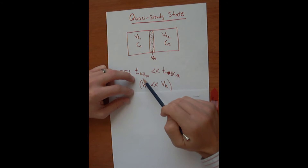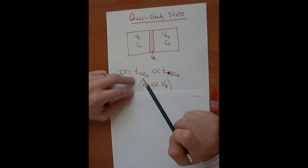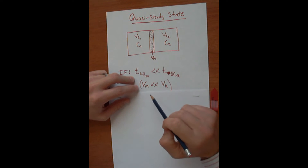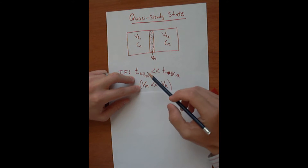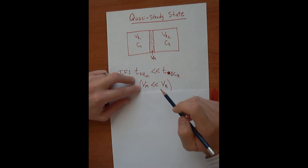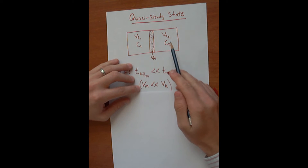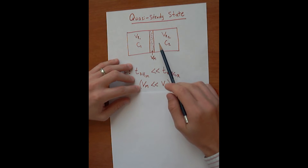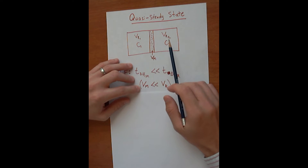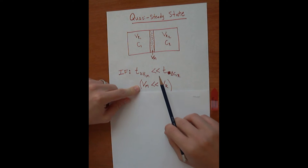When would the time of diffusion through the membrane be much less than the time for concentration change in one of the reservoirs? That's usually the case when the volume of the membrane, V sub M, is much less than the volume of the reservoir. It makes sense — when the membrane is really small and the reservoir is really large, diffusion through the membrane happens very fast compared to changing the bulk concentration in a large reservoir. If that applies, you can assume it's quasi-steady state.